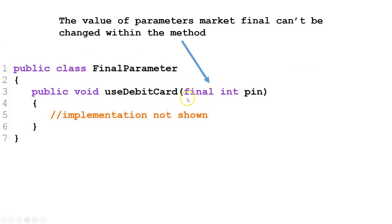Here is an example of a parameter that has been declared final. Inside this method, use debit card, the value of pin cannot be changed. However, if we call use debit card again, pin can be assigned a different value.